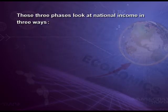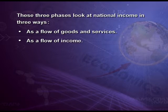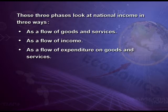These three phases look at National Income in three ways: as a flow of goods and services, as a flow of income, and as a flow of expenditure on goods and services.